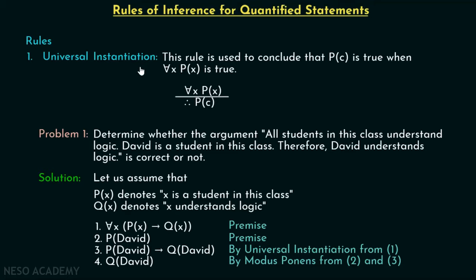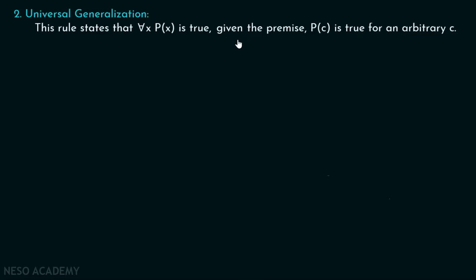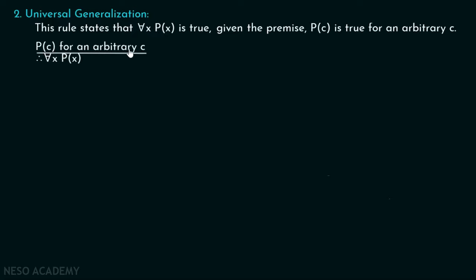Now let's discuss our second rule, that is universal generalization. This rule states that for all x, P(x) is true, given the premise that P(c) is true for an arbitrary c. This is the opposite of what we saw previously. When P(c) is true for an arbitrary c, then for all x, P(x) is true. Here we are considering an arbitrary c — any c, randomly chosen. If for some random c, P(c) is true, then for all x, P(x) has to be true.